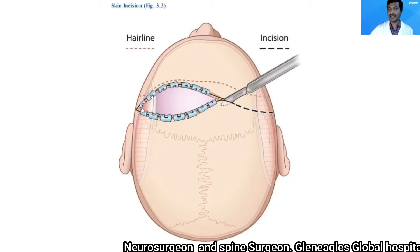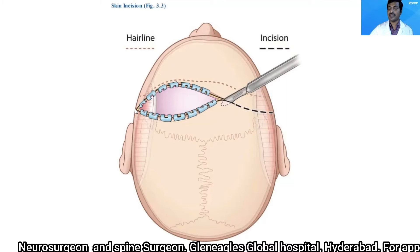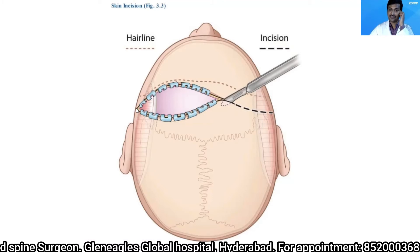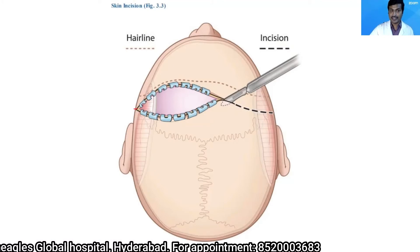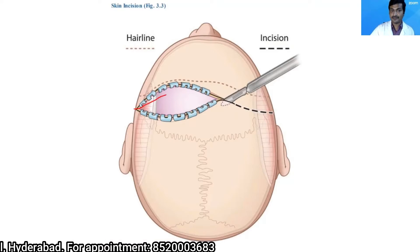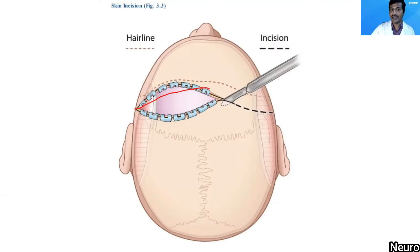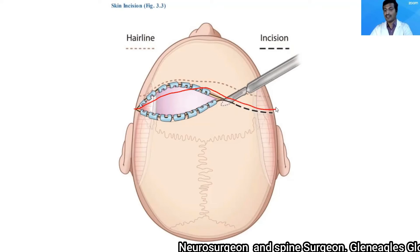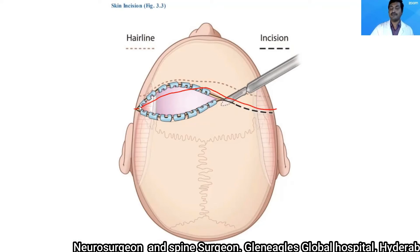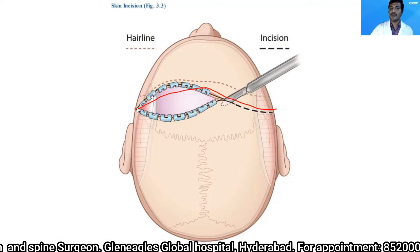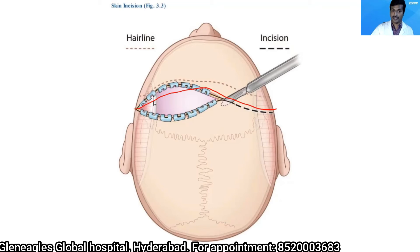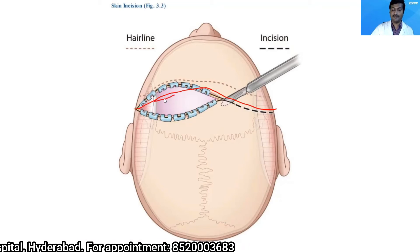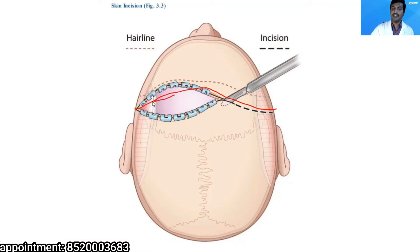We make a bicoronal skin incision starting from the zygomatic arch on one side, at least one centimeter in front of the tragus, running along just behind the hairline to the midline, then mirroring to the opposite side. I use a number 15 blade to incise the skin down to the level of the pericranium above the superior temporal line, and down to the temporalis fascia below it.